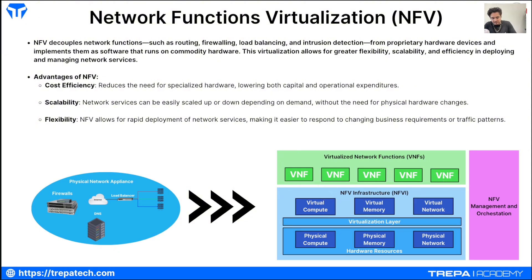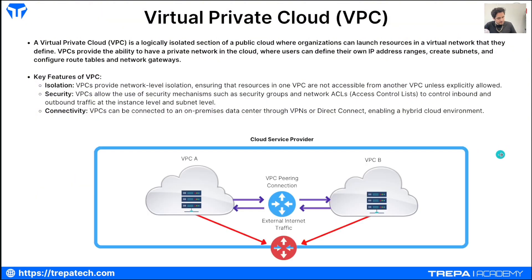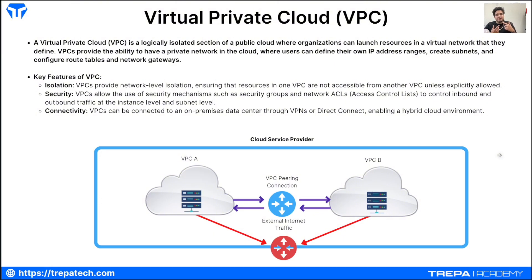Now let's talk about a VPC. The big three cloud service providers all do this a bit differently. In Azure it's called a VNet; in AWS it's called a VPC. Essentially, it's a segmented, isolated subnet in your public cloud deployment that gives you isolation. In Azure, you create a VNet and within it create multiple subnets — that's the VPC equivalent.